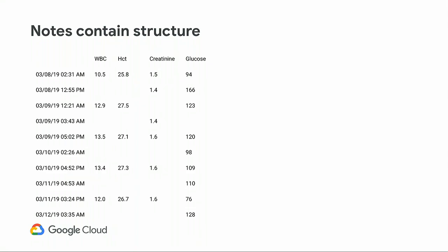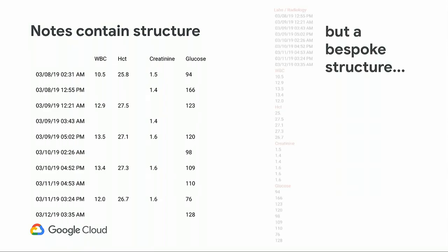Sometimes notes aren't fully unstructured — they contain structure and tabular data, which can be hard for an NLP system to understand, especially when the raw data has a bespoke structure. For example, some lab data has names highlighted with lots of gaps in the table because data wasn't dense for every time period, so you have to interpolate which data belongs to which time period.